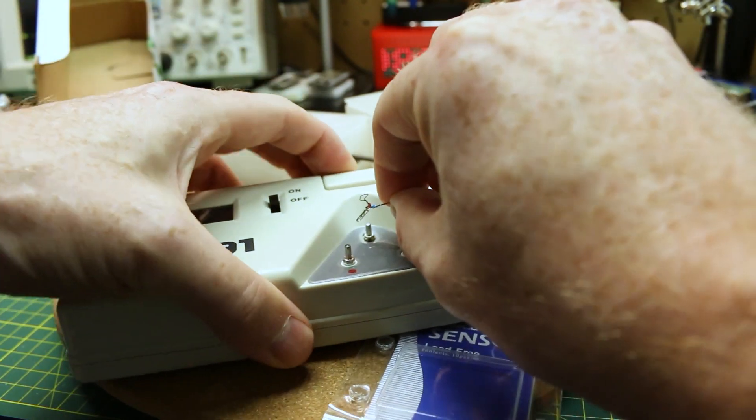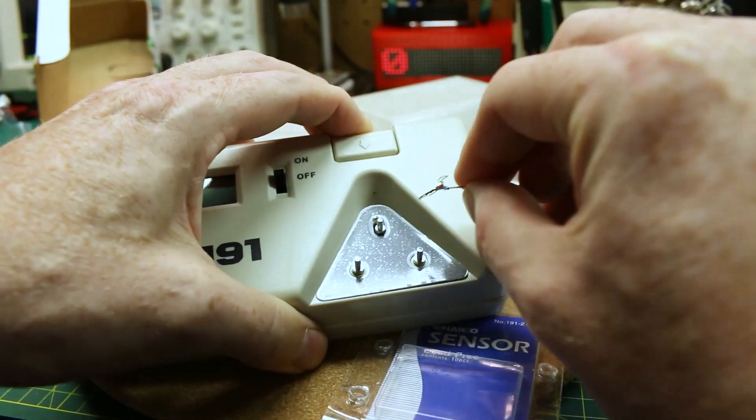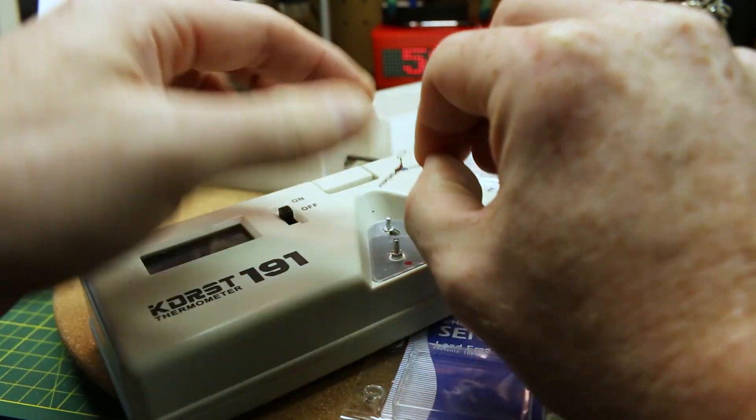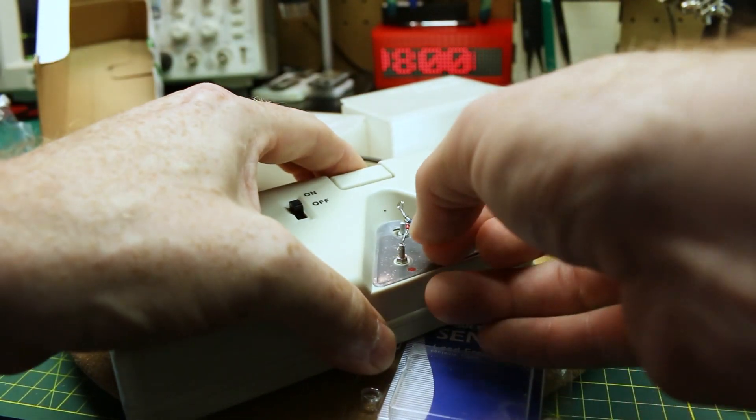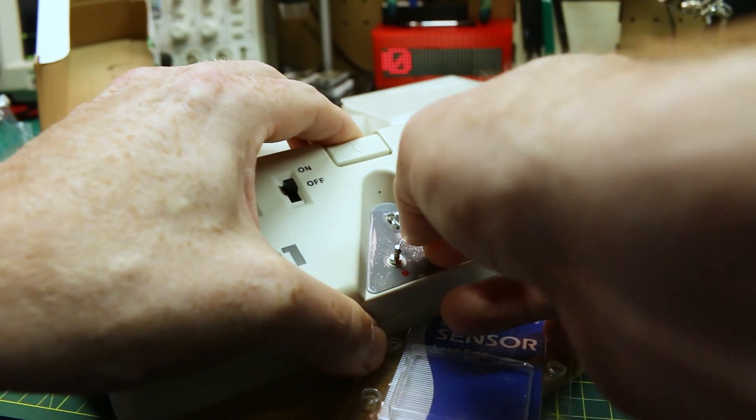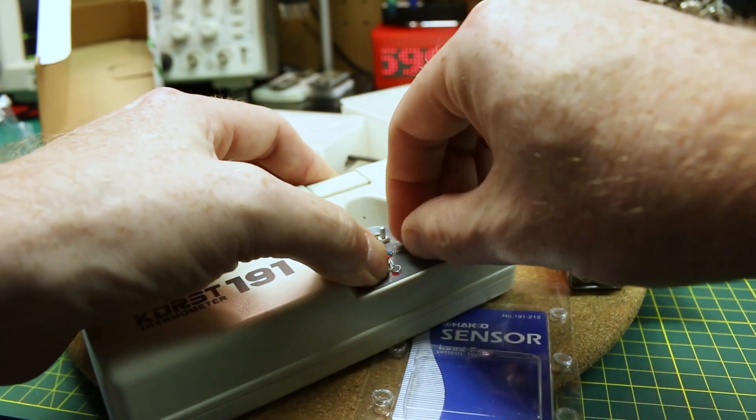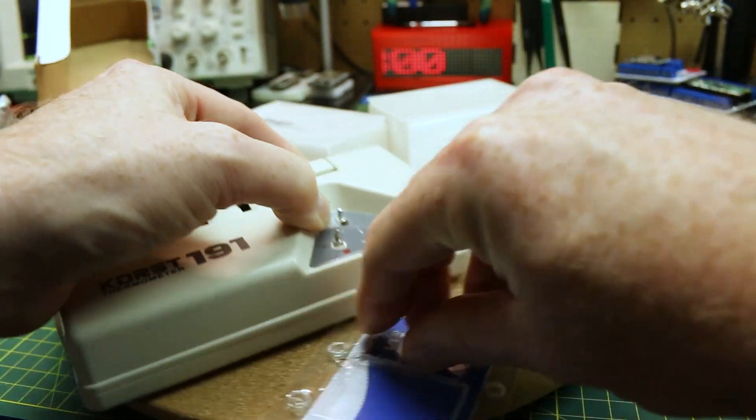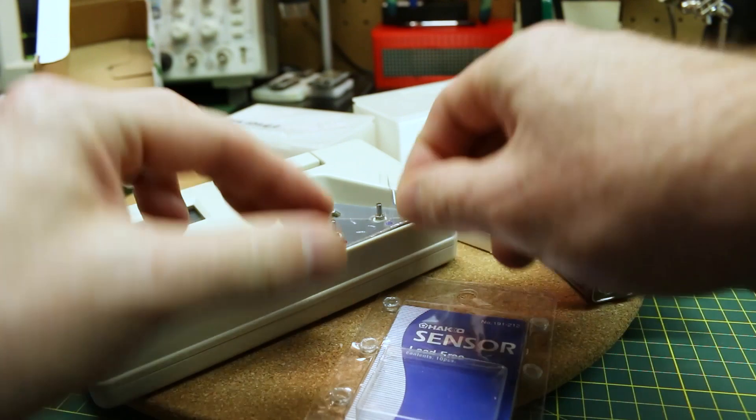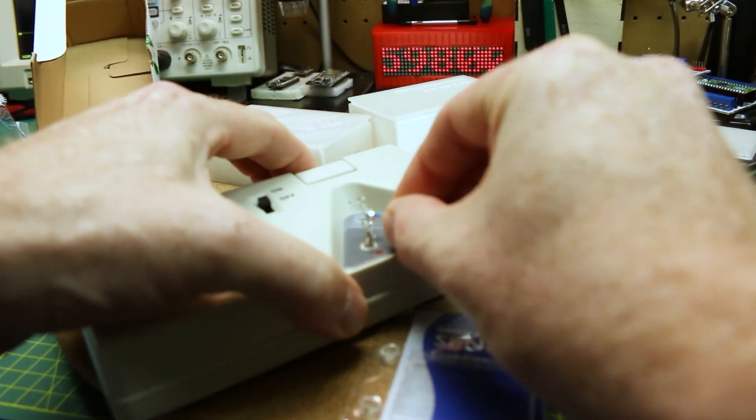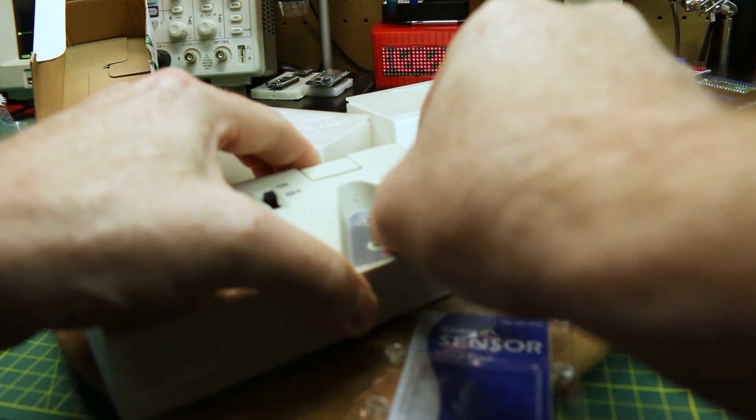We should be able to spring tension here. Put this on. Maybe a little trickier than what I thought. Maybe not. Should just hook on there if they're the right size. I might have to fiddle with this a little bit. Just match up the color codes and hook it in place.